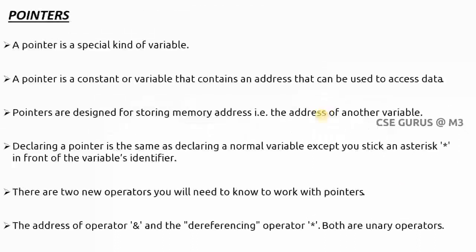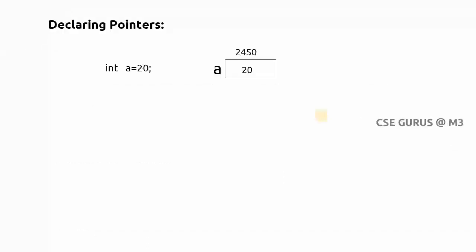Before going to the theory part, let me explain how a pointer is defined with a simple program. Suppose I write: int a = 20. What happens inside the compiler? For variable a, the value 20 is stored in a particular memory location — let's say address 2450. Since it is an integer, 4 bytes are allocated, and the value 20 is stored in those 4 bytes.